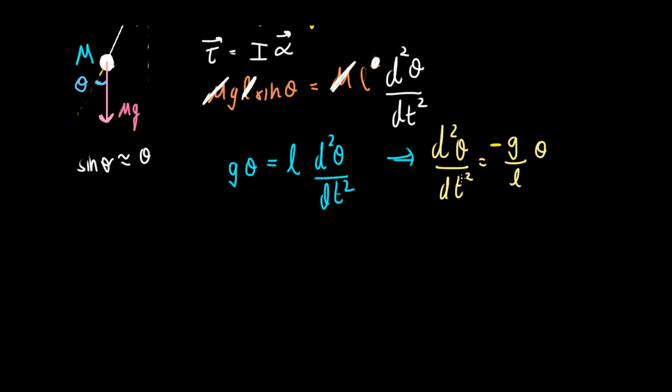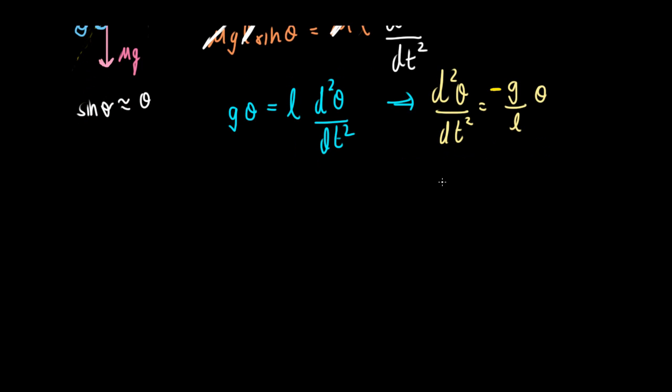So can we compare this with something? Sure. We can compare this with d²x/dt² equals minus ω² x, just that instead of x we have a theta here. So if you compare, then ω will be equal to the square root of g over L.